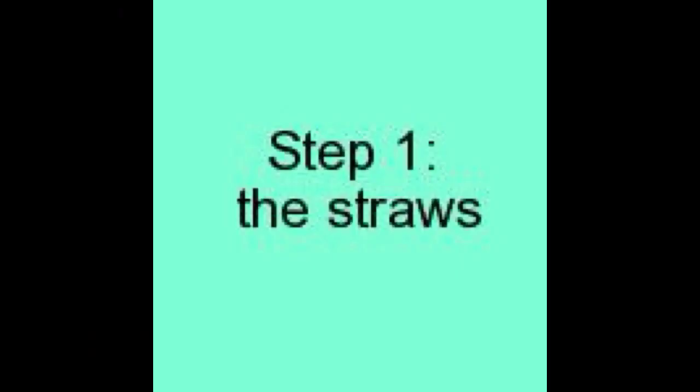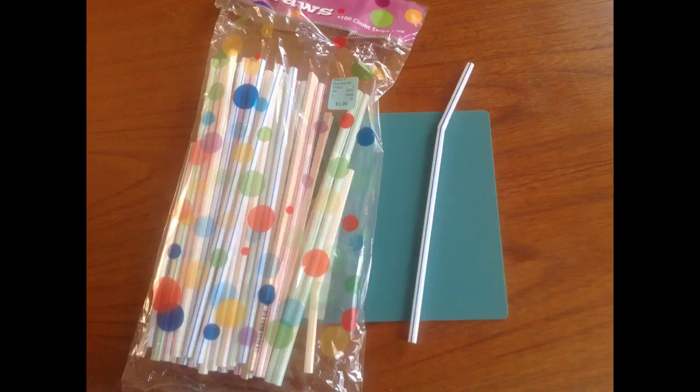Let's begin with the straws. You can buy them in the grocery store and you're looking for the ones that have a vertical stripe and different colors. The reason for the stripe is that it makes it easier to align the notches, and the colors also help to bring out certain features of the model.